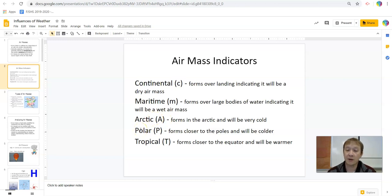Polar is going to be just south of that. They form closer to the poles but not all the way up in that Arctic Circle. So they will be colder, but they're not as cold as the Arctic air mass. Then the last key indicator is tropical. Tropicals form normally close to the equator or in tropical areas. Since they're close to the equator, they get more sunlight, which means they tend to be warmer.